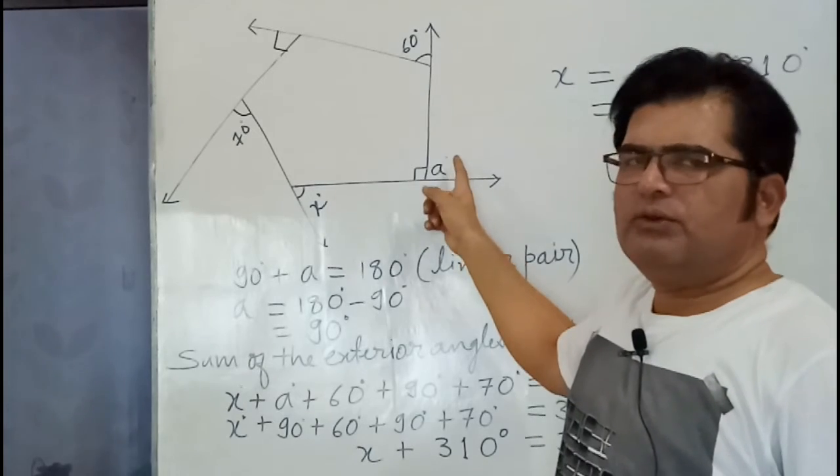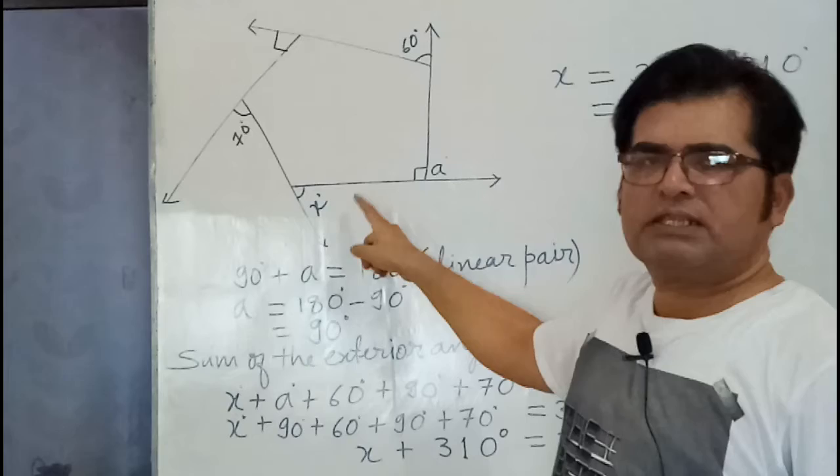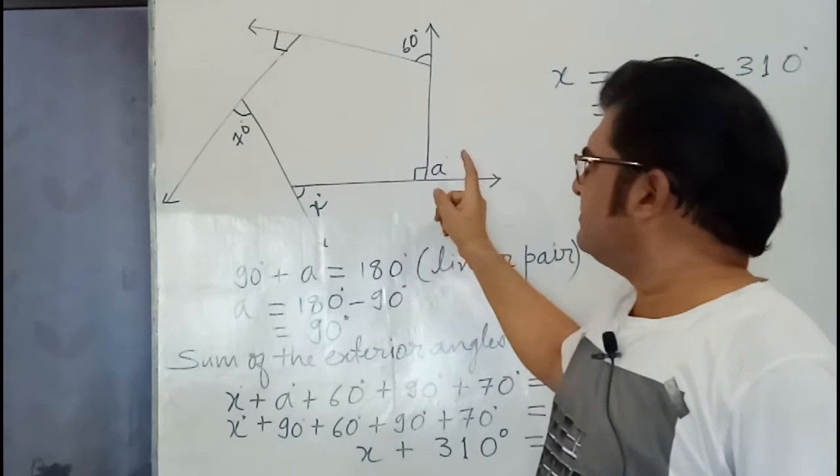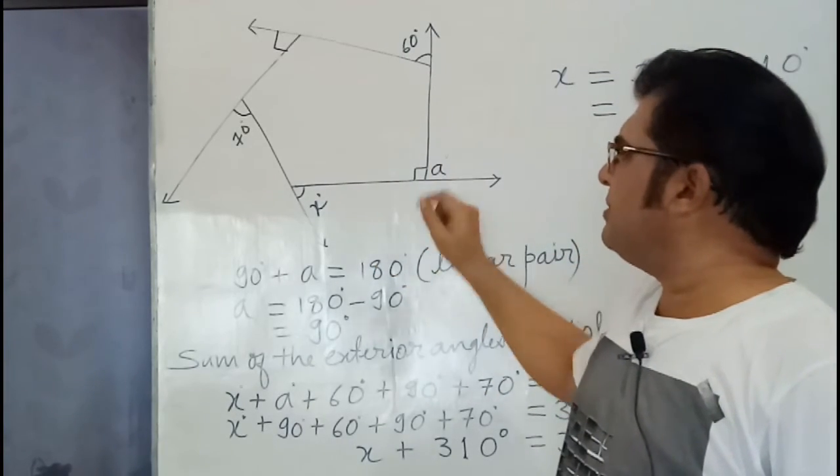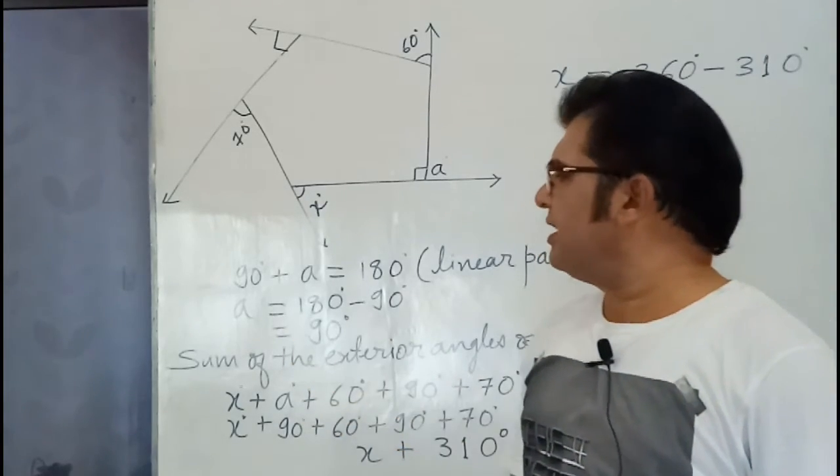You can use any variable here except X because X is already given in the question. So by linear pair, 90 plus A equals 180 degrees, so A equals 180 minus 90, which equals 90 degrees by the linear pair.